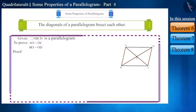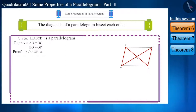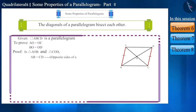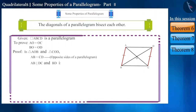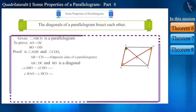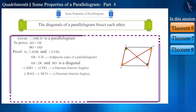Let's prove that triangle AOB and triangle COD are congruent. In both these triangles, side AB is equal to side CD — because the opposite sides of a parallelogram are equal. Also, side AB is parallel to side DC and BD is a diagonal. Therefore, angle ABO is equal to angle CDO, and angle BAO is equal to angle DCO, because both of these are alternate interior angles.